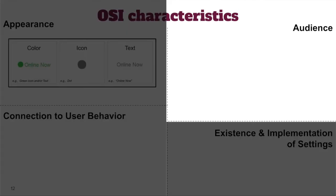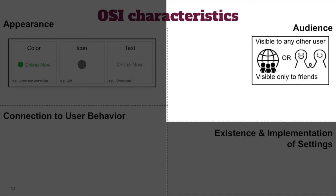Moving on to audience: one factor for determining an OSI's audience is whether it's visible to everyone else in the app or just people you're friends with. We found 21 apps whose OSIs were only visible to friends by default, and 14 apps whose OSIs are by default visible to any other user of the app. This includes all of the online dating apps. One might ask whether it's a desirable design choice for strangers to always be able to see whether you're online or offline in a dating context.